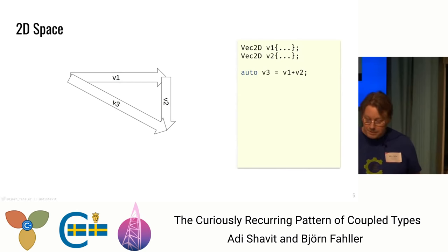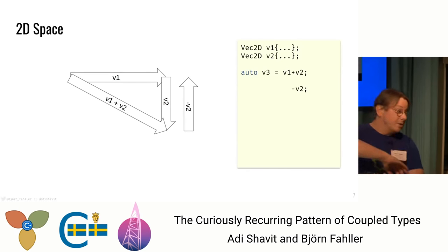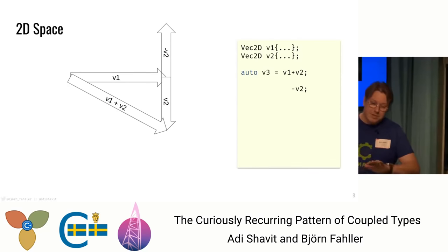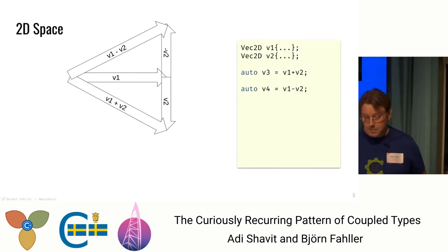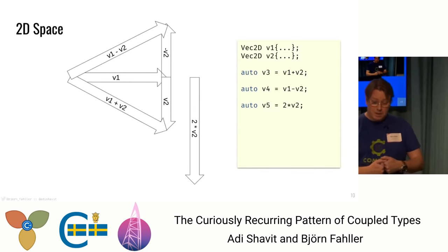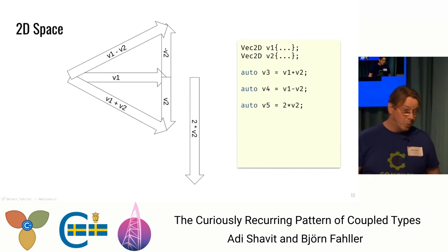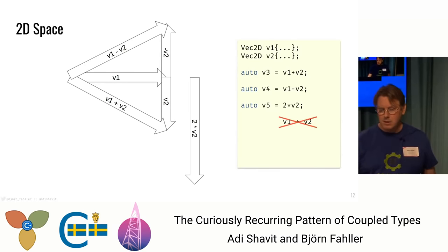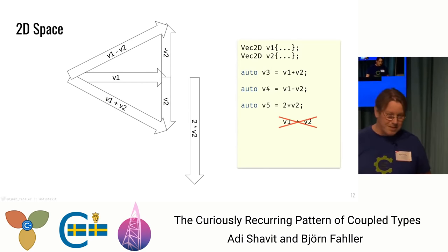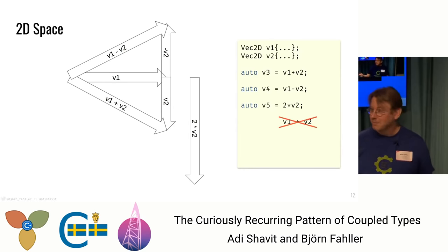An important thing about vectors is that they have a direction and a length. They don't really have a position, but I have to draw them somewhere — so we can slide them around, nothing has changed. We can add vectors: V3 is the sum of V1 and V2 by sliding the vectors so you concatenate them and get the resulting vector. Subtracting a vector is just reversing its direction, so V1 minus V2 is the sum with the reversed vector. We can also scale a vector by multiplying with a scalar — doubling its size, or dividing to make it shorter. Multiplying vectors? Not in this world.